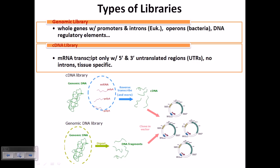cDNA libraries only contain regions that can be translated — only exons, which are the translatable regions — and they definitely don't have any introns. So a cDNA library will tell us about protein expression. We can utilize cDNA libraries for the expression of proteins; we can transfect other cells with this and trigger the cell to express several types of proteins inside them.